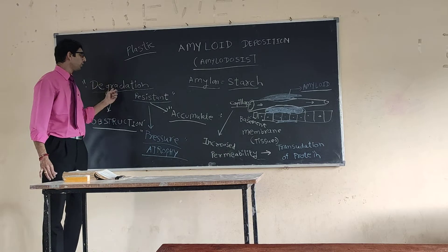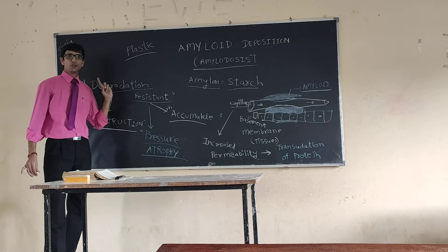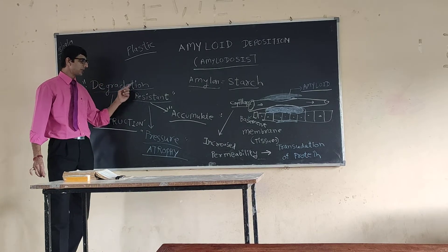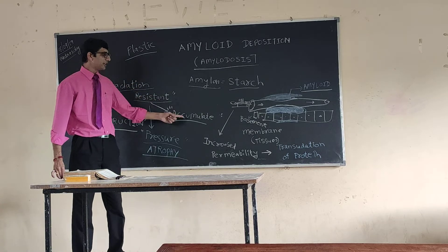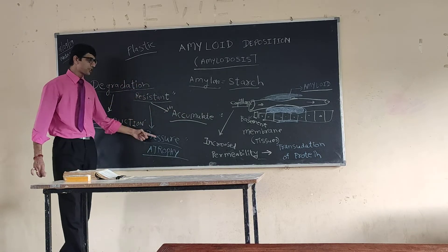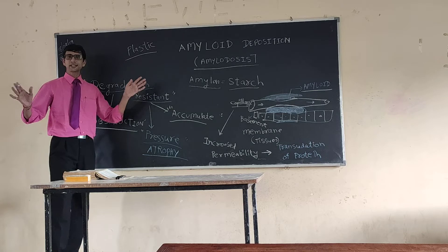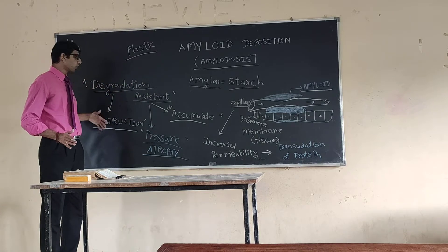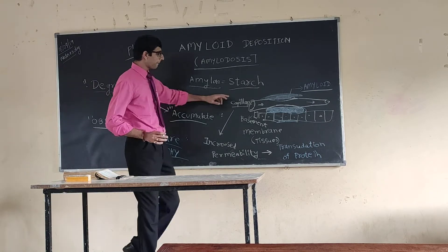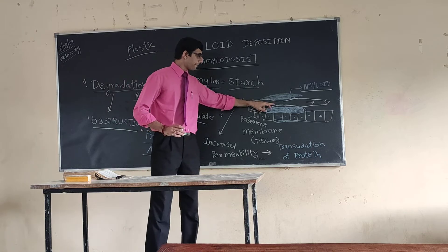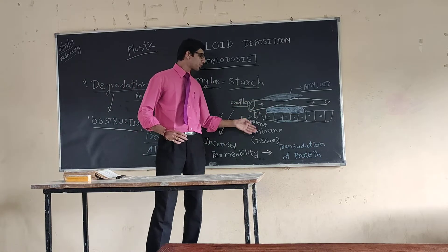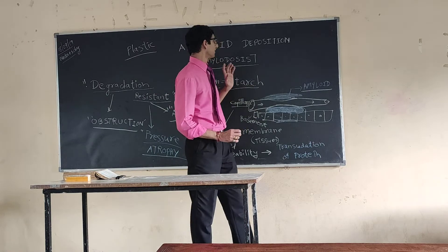So three effects we have seen due to this unique characteristic of being resistant to degradation: it leads to accumulation, it leads to pressure atrophy in the surrounding tissue, it leads to obstruction, and due to the constant pressure, permeability of the artery increases, leading to transudation of protein.